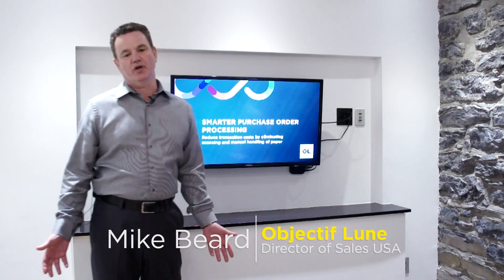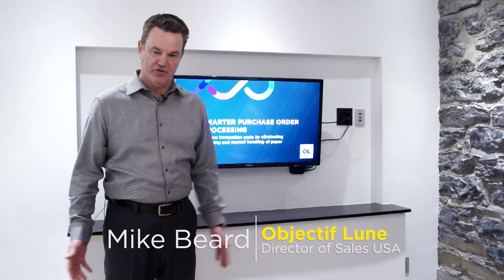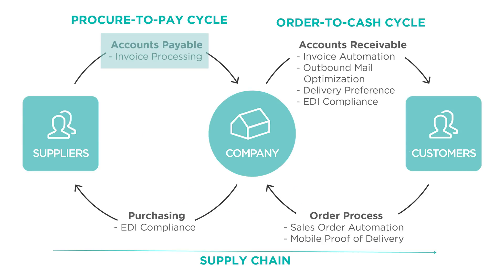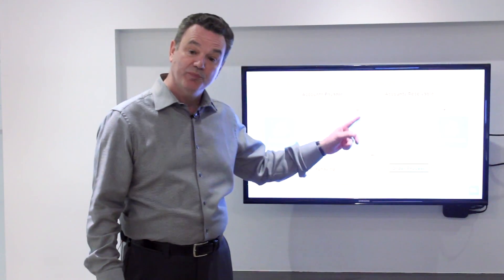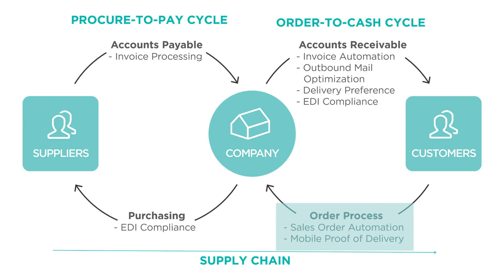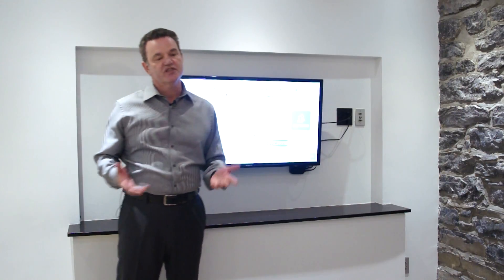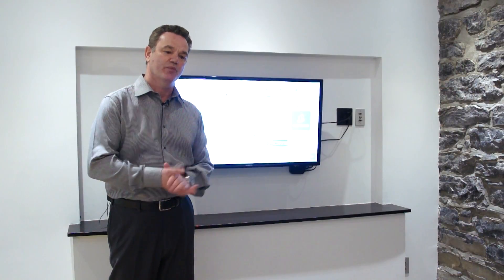Hello, today I'm going to take you through Objective Loon's brand new smarter order processing system. Objective Loon manages transactional document workflow and composition in many different ways. We handle accounts payable inbound invoices, accounts receivable outbound invoices, outbound purchase orders, and very importantly we now handle inbound purchase orders — and the rest of this conversation is going to be exactly that: managing inbound purchase orders.